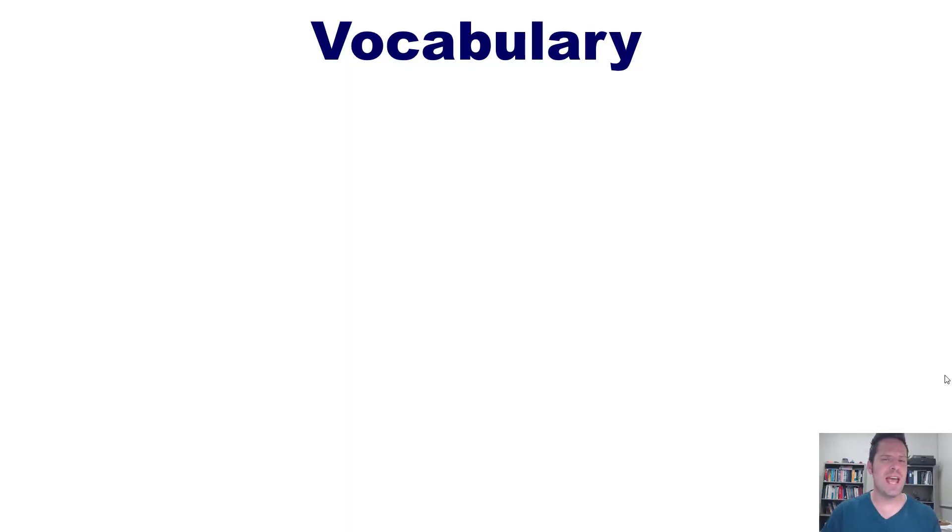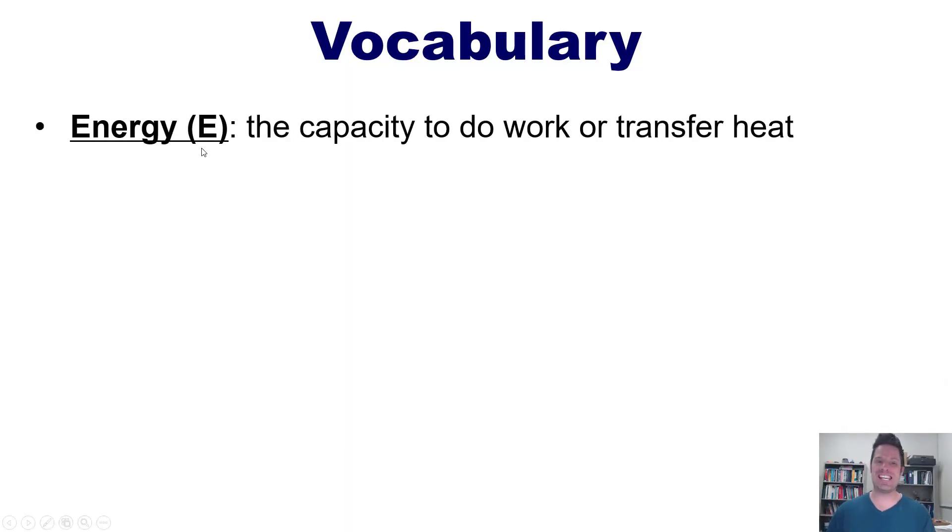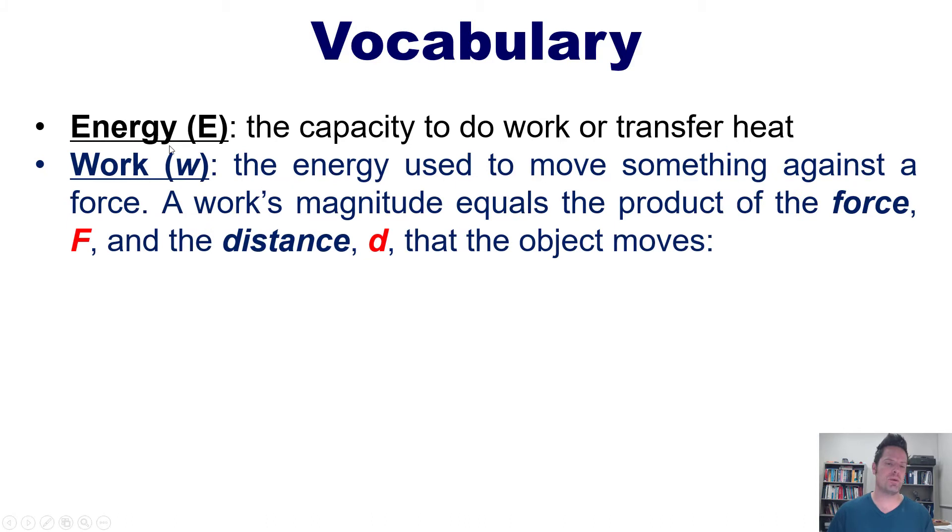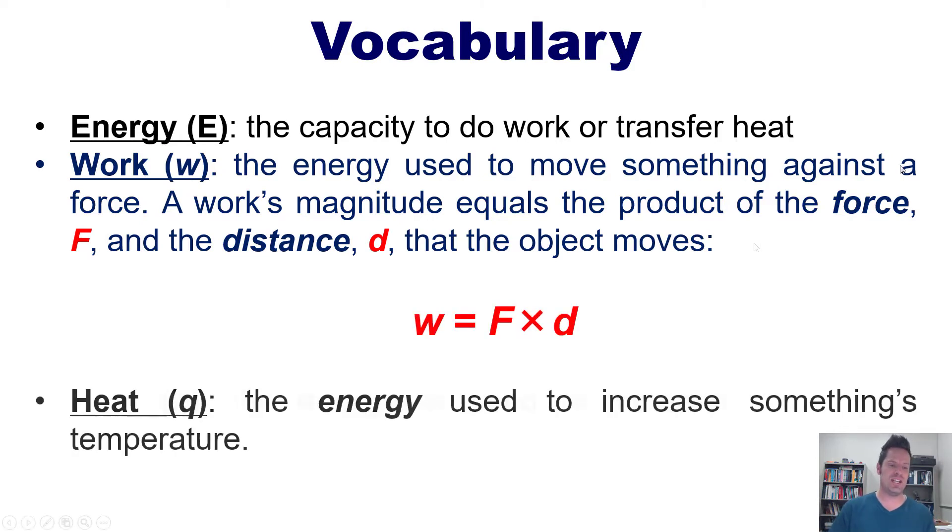The first term we need to know is energy, abbreviated with the letter E. It is the capacity to do work or to transfer heat. Next is work, abbreviated with the symbol W. Work is the energy used to move something against a force. A work's magnitude equals the product of the force F and the distance d that the object moves, according to this physics equation. And next is heat, abbreviated with the symbol Q. Heat is the energy used to increase something's temperature.